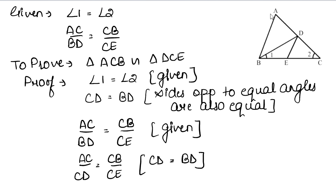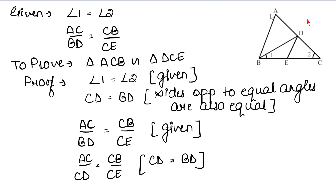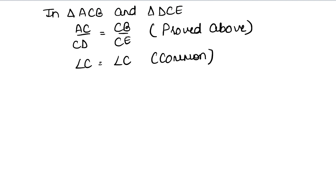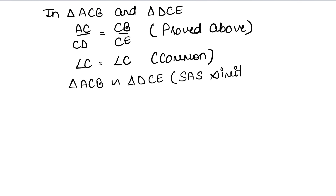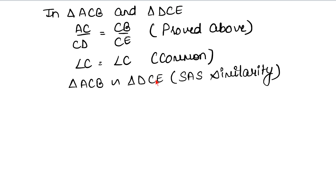ACB में और DCE में angle C common है. तो दो sides और एक included angle equal हैं — AC upon CD equals CB upon CE, और angle C common है. इसलिए triangle ACB, triangle DCE के similar है. यही हमें proof करना था — triangle similar proof कर दिया.